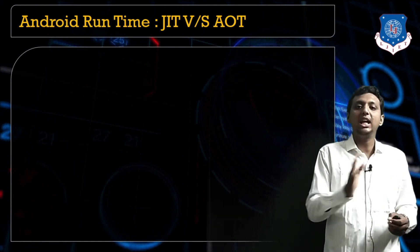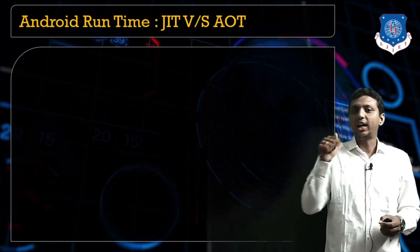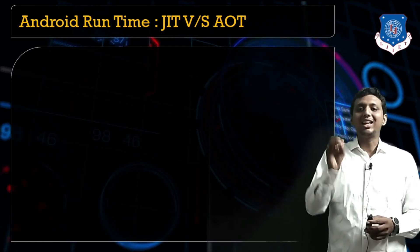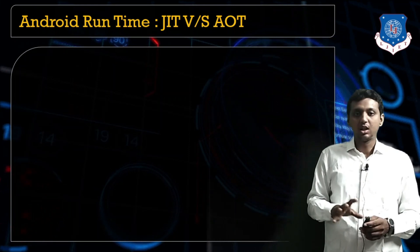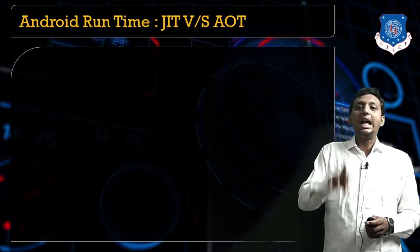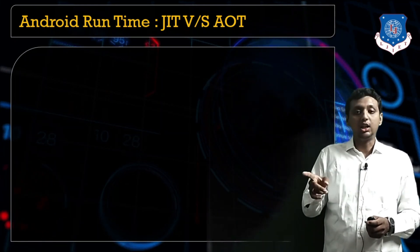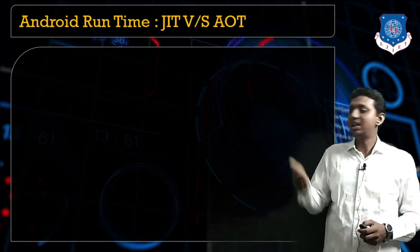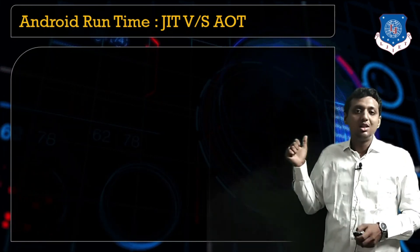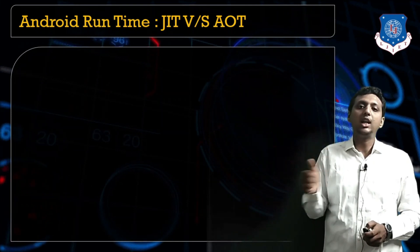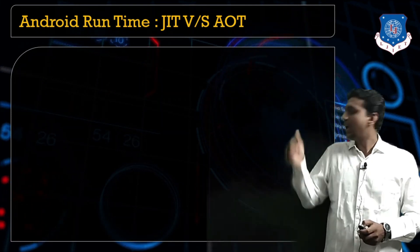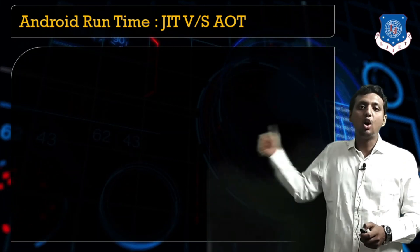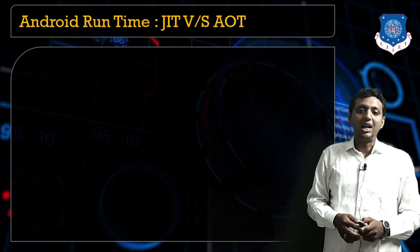Right now Android smartphones contain the Android Runtime (ART). Before that, Android worked on the DVM. Both DVM and ART work on some basic principles known as JIT and AOT. JIT stands for Just-In-Time and AOT stands for Ahead-Of-Time.